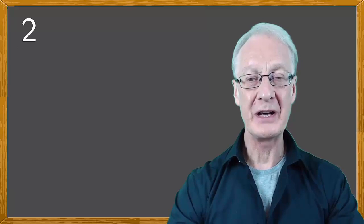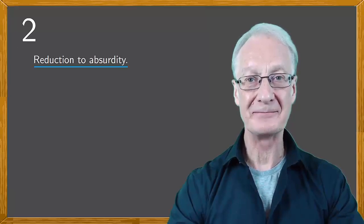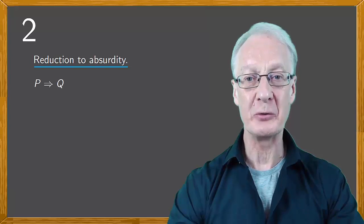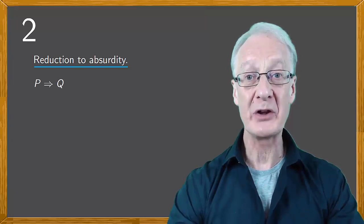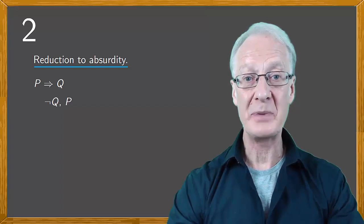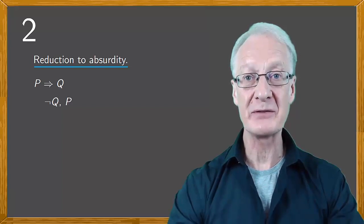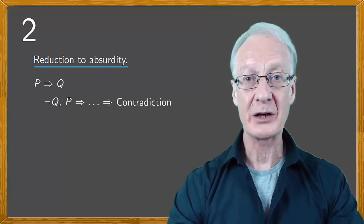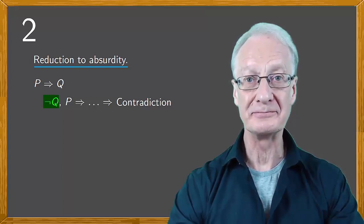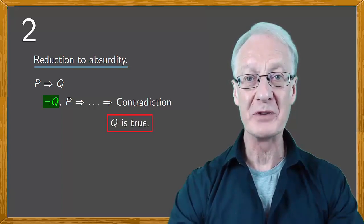A second type of proof is reduction to absurdity. Say we want to show that P implies the truth of Q. We start by assuming that NOT Q is true. We have that P is true, and then after a series of logical steps, we arrive at a contradiction. A contradiction of what? Of the assumption that Q is not true. Therefore, Q must be true, which is what we wanted to show.